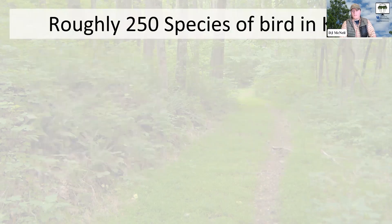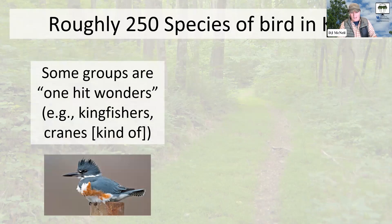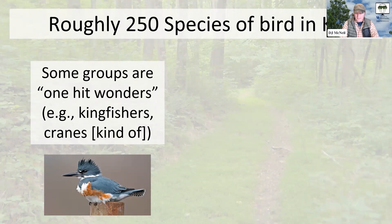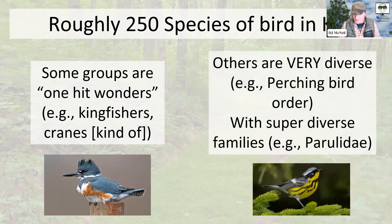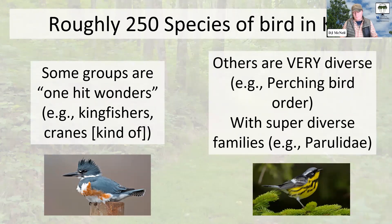We have roughly 250 species of bird in Kentucky, which is very exciting for me as somebody who studies birds. In Kentucky we have some one-hit wonders — like the belted kingfisher is the only kingfisher we regularly see here. The sandhill crane is basically our only crane species, although the whooping crane, a federally endangered species, does occasionally move through the state. Others are extremely diverse — the perching bird order or songbird order, Passeriformes, constitutes more than half of the birds we have in the state, with some families being super diverse, like Parulidae, the warblers.